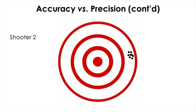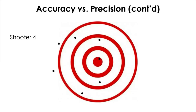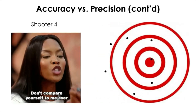Shooter 3 is less accurate than shooter 1 but better than shooter 2 in terms of accuracy, as the shots are more or less scattered around the center. However, the precision of shooter 3 is less than shooter 2, as the shots are more spread out. And shooter 4 is the worst in terms of both accuracy and precision — the shots are all over the place.